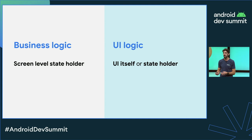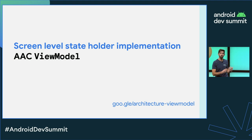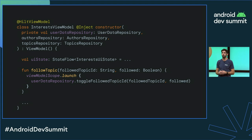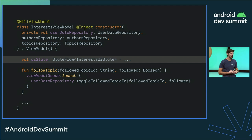In Android, we recommend using Architecture Components ViewModels as the implementation detail of the screen-level state holder. ViewModels will be in charge of exposing the screen UI state and handling the business logic of the UI. Looking at the InterestsViewModel, it manages the business logic complexity of the interest screen, takes dependencies from the data layer as constructor parameters, and exposes the screen UI state of type InterestsUiState — created by applying business logic and combining data from multiple repositories.